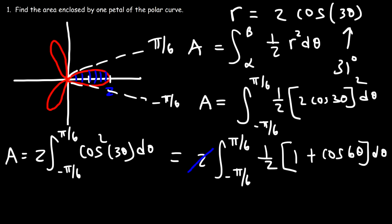Subtracting both sides by 1, we get negative 1 equals 2 sine theta. Then dividing by 2: negative one-half equals sine theta. Sine is negative in quadrants 3 and 4. We need the angle with a reference angle of pi over 6 in quadrants 3 and 4. In quadrant 3, 7 pi over 6 has a reference angle of pi over 6, and the same is true for 11 pi over 6. So alpha is 7 pi over 6 and beta is 11 pi over 6.